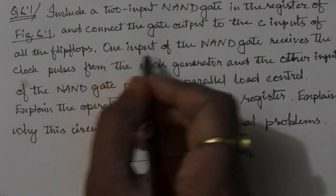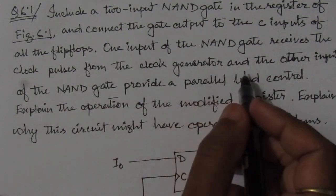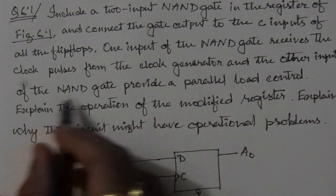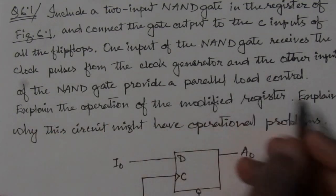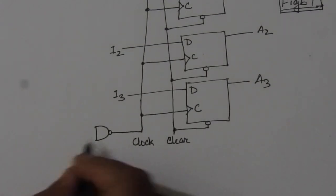In the next line, we are given that one input of the NAND gate receives the clock pulses from the clock generator, and the other input of the NAND gate provides a parallel load control.